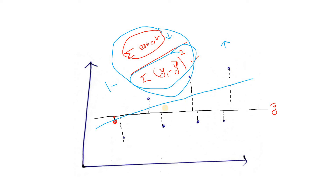Suppose our model is fitting in a very bad way. In that case, the error with respect to the regression line will be more than the error with respect to the mean line. The mean line is just a simple average — not even a machine learning model — and if that fits better, our model is clearly bad. In that case, the numerator is greater than the denominator, making the ratio greater than 1, and 1 minus that term will be less than zero.